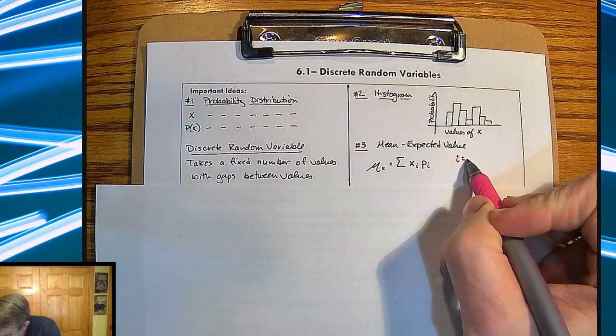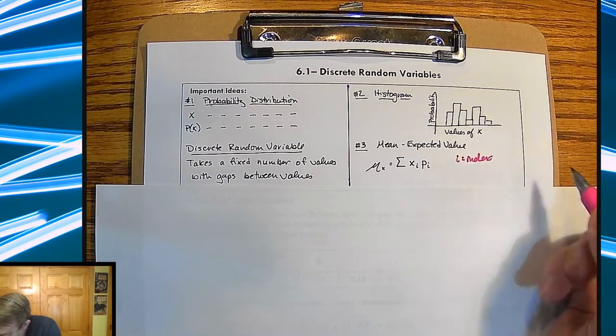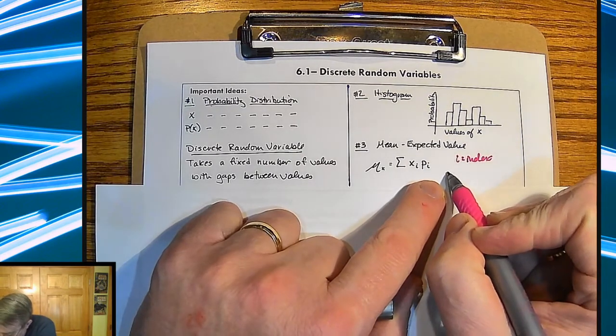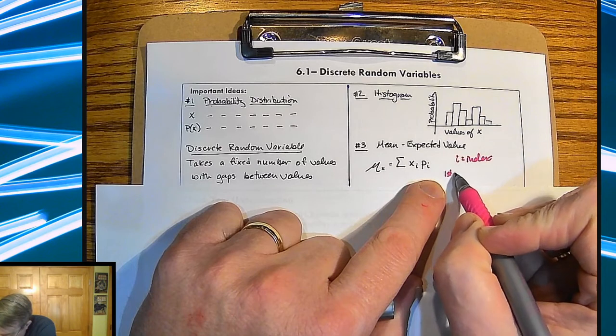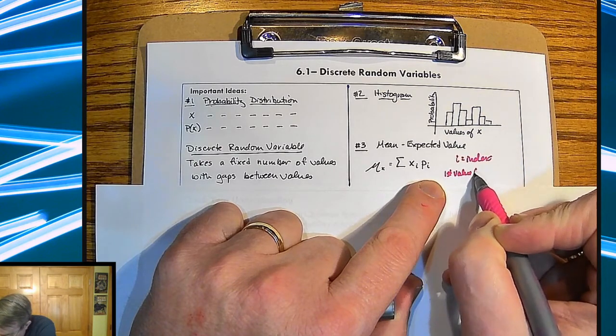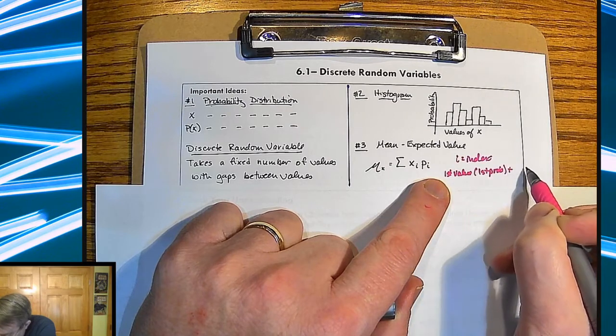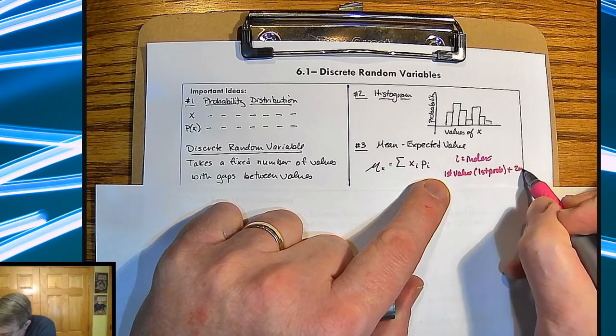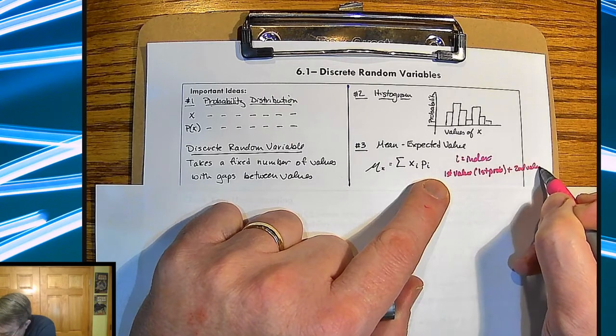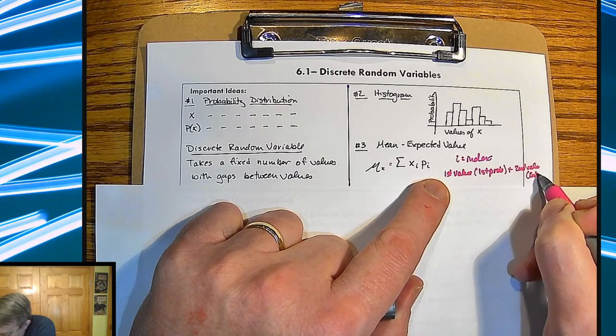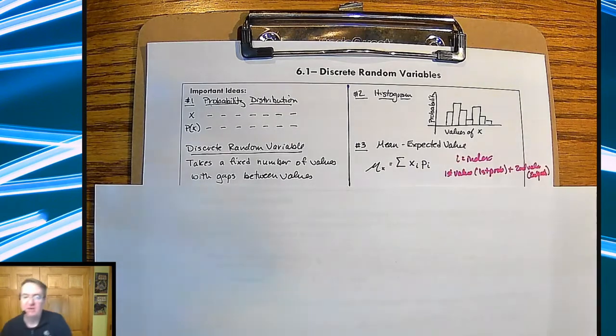So basically, first value times first probability plus second value times second probability, et cetera, et cetera. So you're just going to sum all of that up.